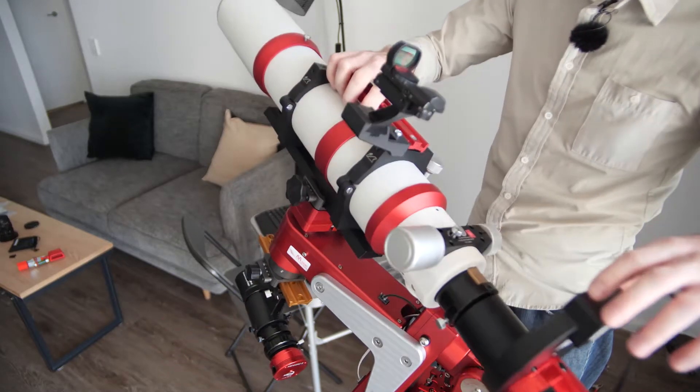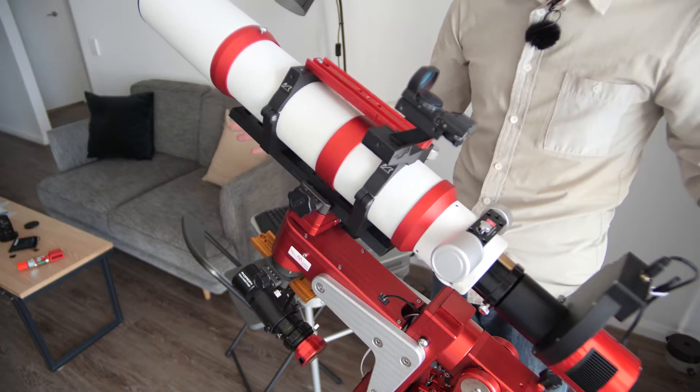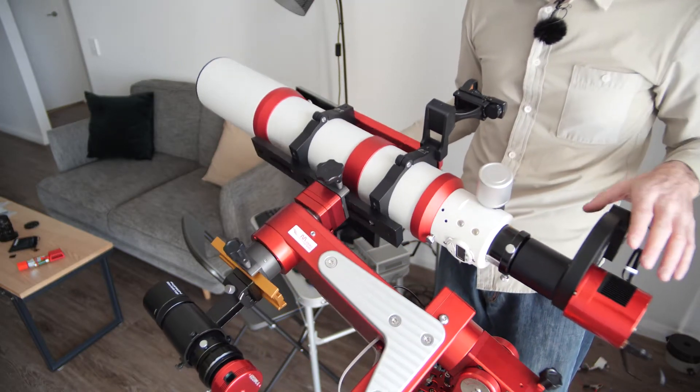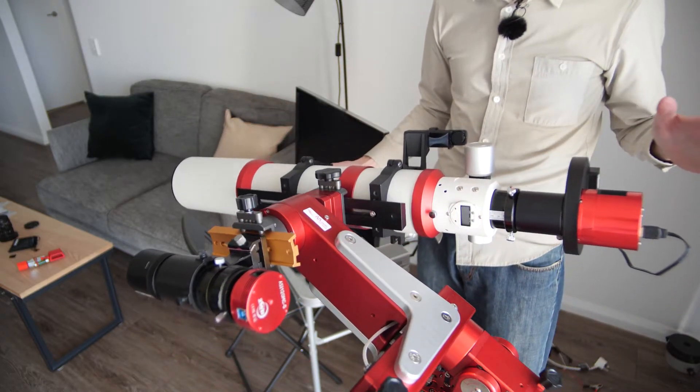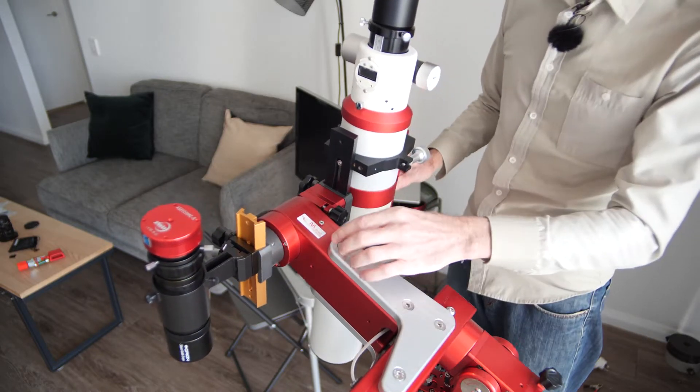After deck and RA balance is complete, we return to the home position and we think we're good to go. However, if we then go hands-free, the telescope does not stay still and rotates like it has a mind of its own. Why is this?